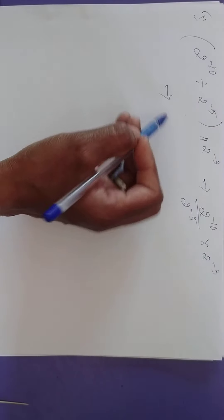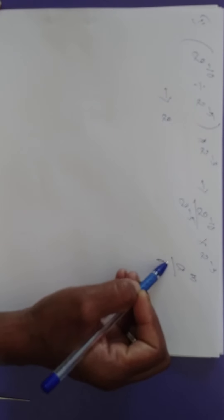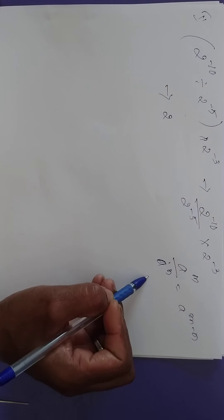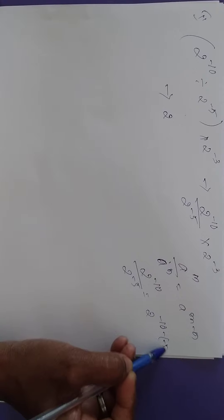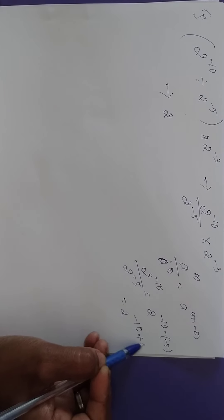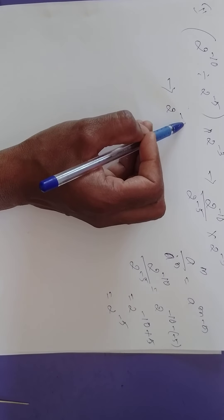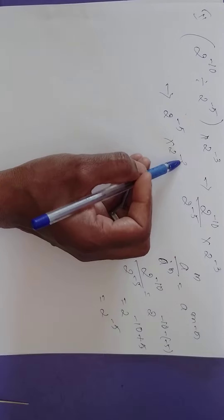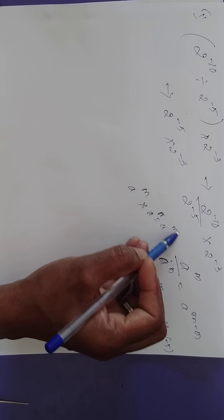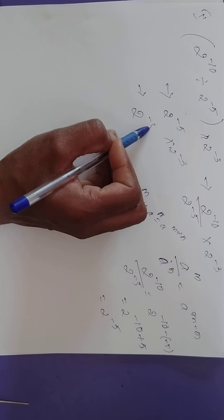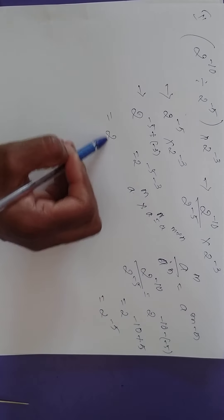We can write this using the law of exponents: A to the power of M by A to the power of N is A to the power of M minus N. So 2 to the power of minus 10 by 2 to the power of minus 5 equals 2 to the power of minus 10 minus of minus 5, which is 2 to the power of minus 10 plus 5 — that is 2 to the power of minus 5. Now using the first law, A to the power of M into A to the power of N equals A to the power of M plus N: 2 to the power of minus 5 plus minus 3 gives 2 to the power of minus 8.